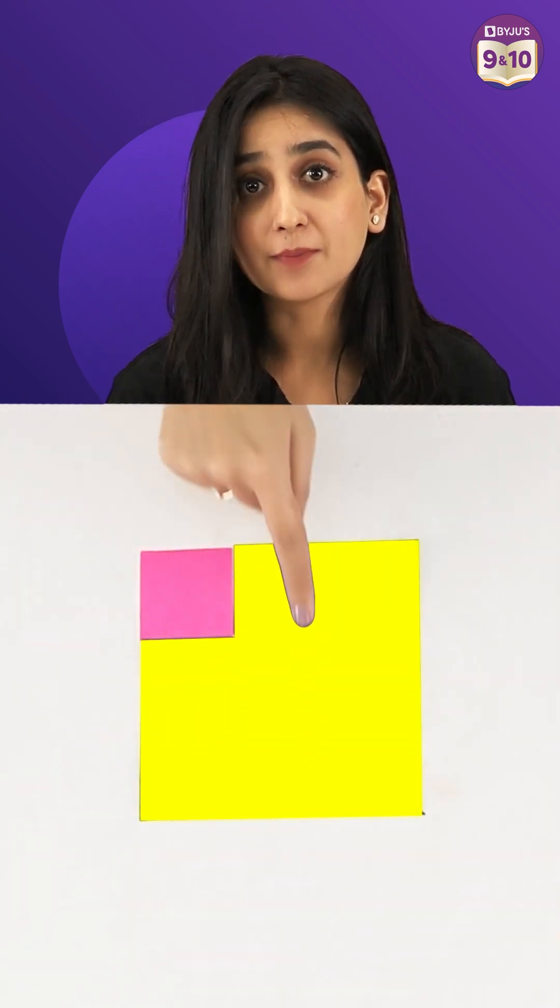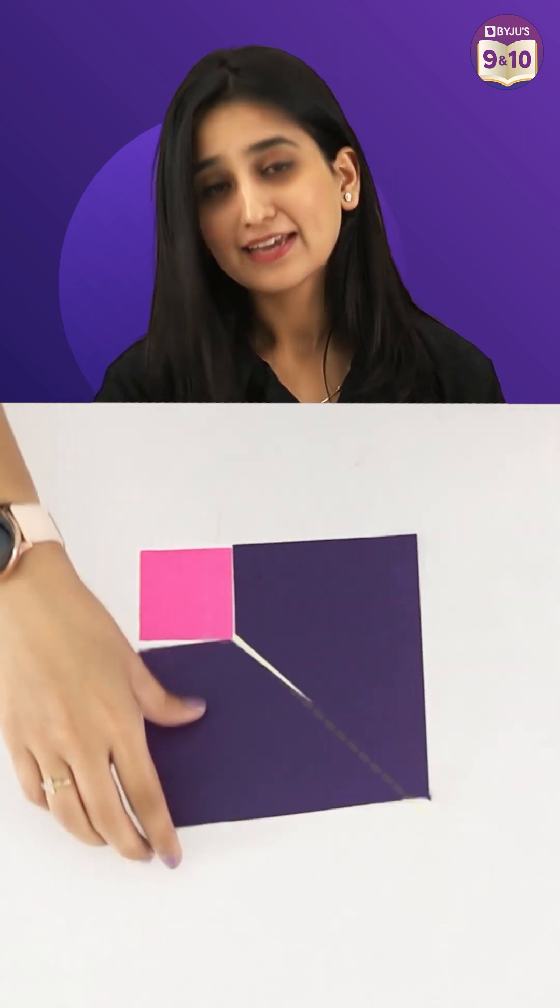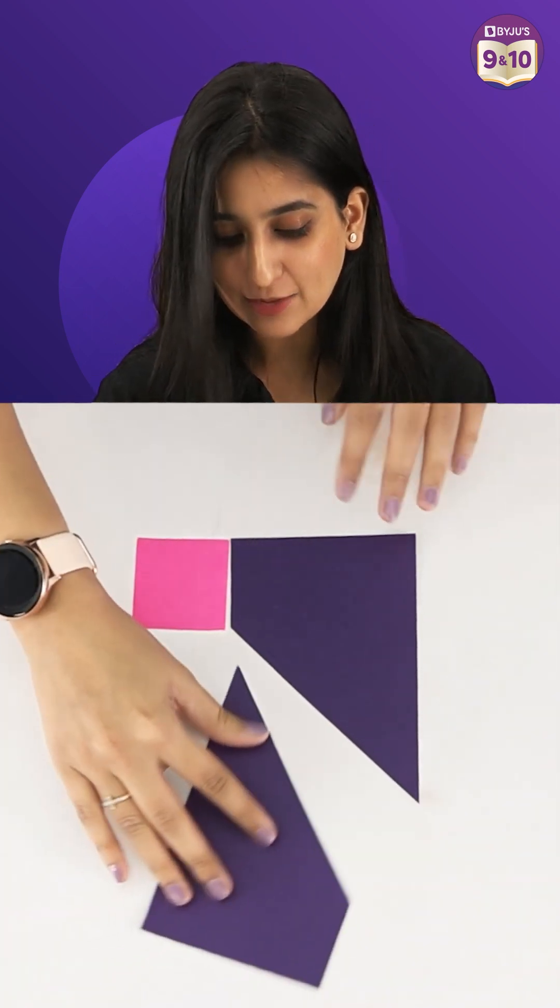Notice the leftover L-shaped paper over here. Let's cut it like this, flip it and combine it.